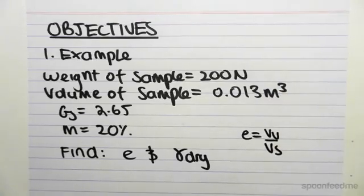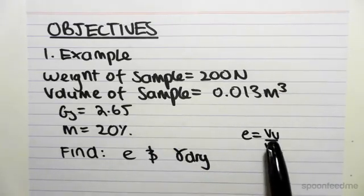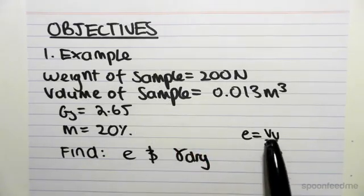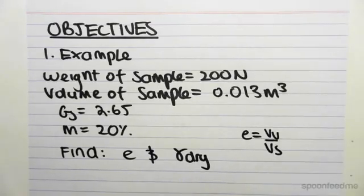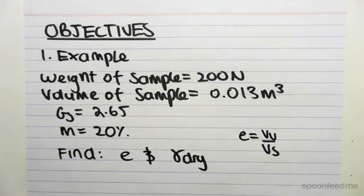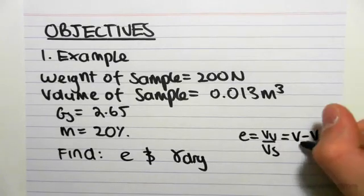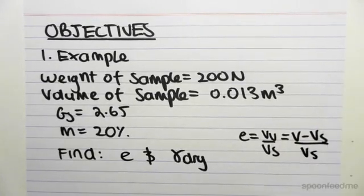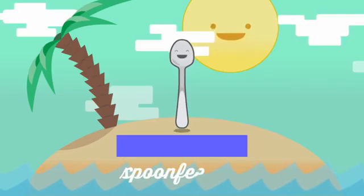What we're going to have to do is get information based on volumes. We've been given a volume of the sample and the weight of the sample. So we have to be able to get back to volumes of our components and then we might be able to find the void ratio. We also know that the void ratio is equal to the total volume minus the volume of the solids over the volume of the solids. In other words, if we can find the volume of our solid, and we've been given the total volume.